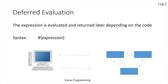Immediate evaluation is faster than deferred evaluation, but JSF uses deferred evaluation the most because of its multi-phase lifecycle. This means that your server needs to hold on to your request, compute some things on top of it, and then send it back. This can't be done with immediate evaluation, so the server uses deferred evaluation much more.